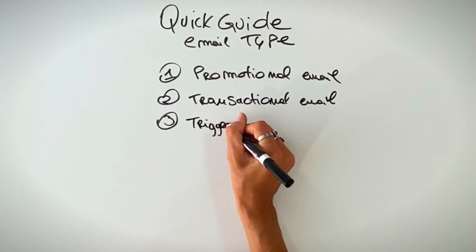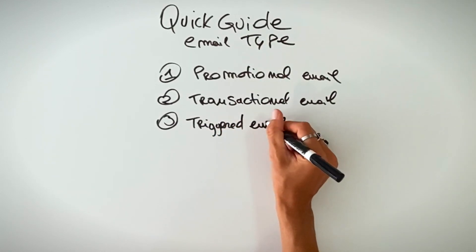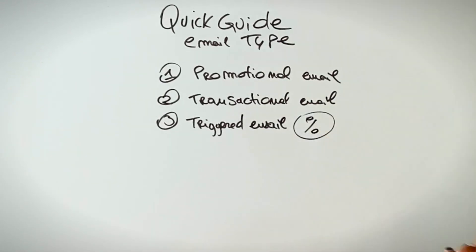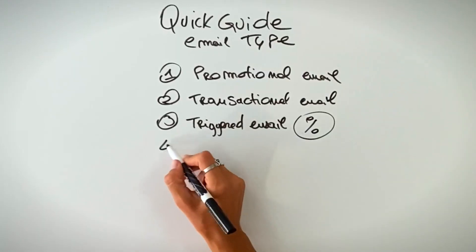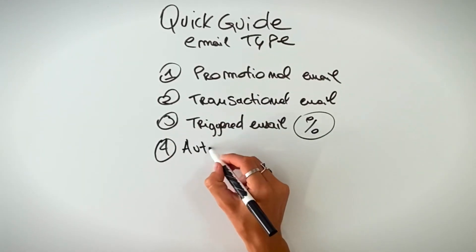Then there are triggered emails, where you might send a discount because they clicked something, or answered one of your questions — like 'do you like this video, yes or no?' or 'would you like to see more of this?' If they answered yes, you reward them. That button click brings them to the next automated email, which you can build inside GetResponse easily. That triggered email tells them they won a 30% or 20% discount.